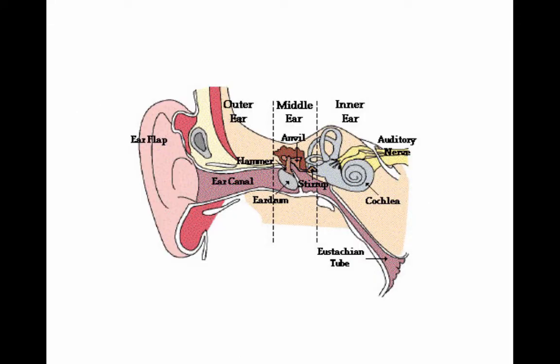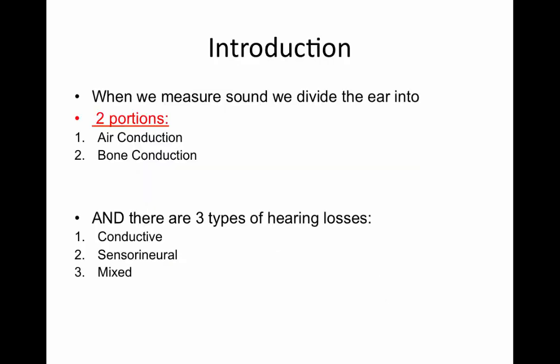The outer ear consists of your pinna and ear canal. The middle ear contains the three smallest bones in your body, the eardrum and the middle ear space. The inner ear is the cochlea, the hearing organ, and the auditory nerve.